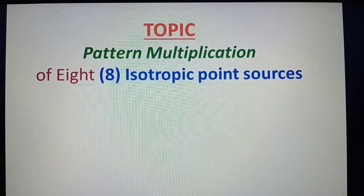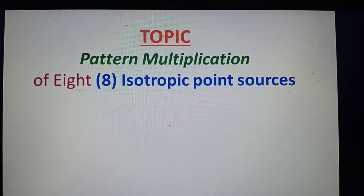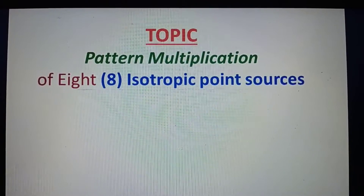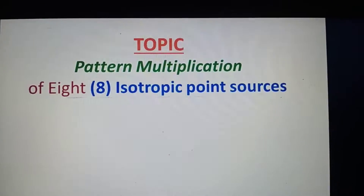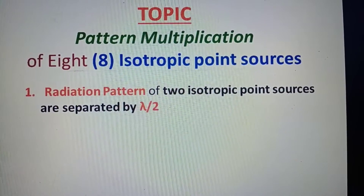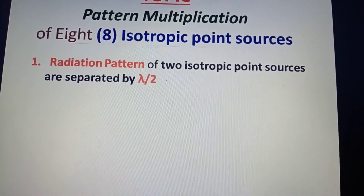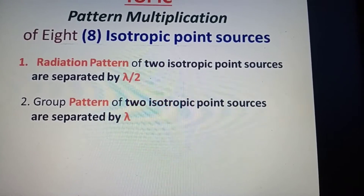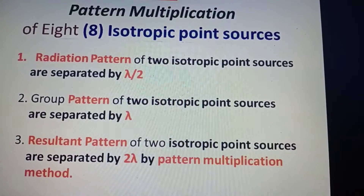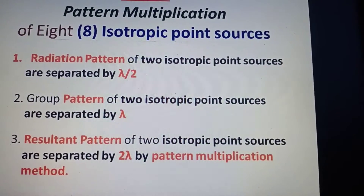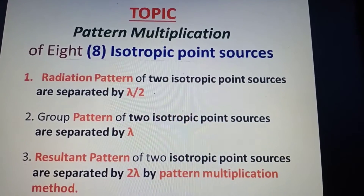In this session we are going to discuss pattern multiplication of eight isotropic point sources which are separated by lambda/2 distance each. There are mainly three steps: in the first step we calculate the radiation pattern of two point sources separated by lambda/2; then we make two groups each containing four isotropic point sources separated by lambda; and finally we form another grouping with two groups separated by 2 lambda, giving the resultant pattern of eight isotropic point sources separated by lambda/2.